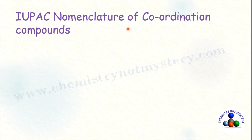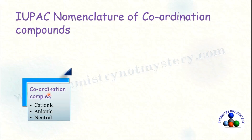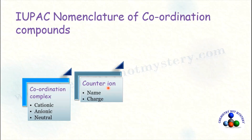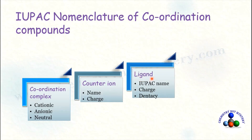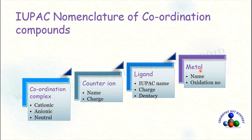For the IUPAC nomenclature of coordination compounds, you have to follow four steps. In the first step, identify the type of coordination complex — whether it is cationic, anionic, or neutral. In the second step, identify the counter ion, its name and charge. In the third step, identify the name of the ligand, its charge and dentacy. In the fourth step, identify the metal and calculate its oxidation number.